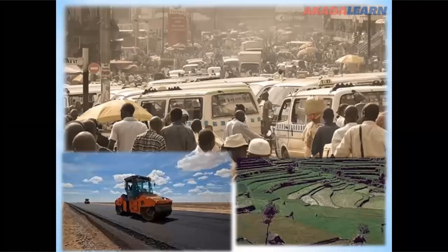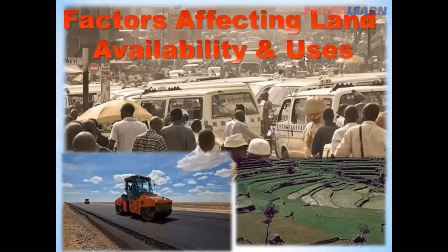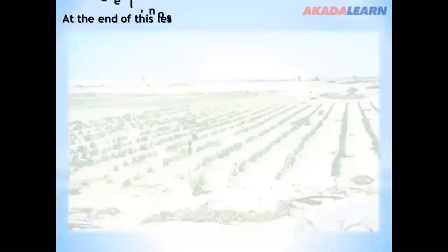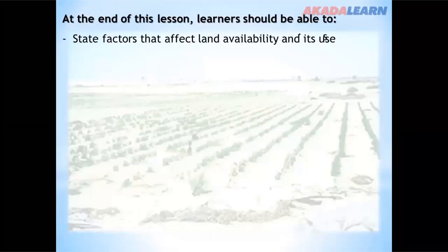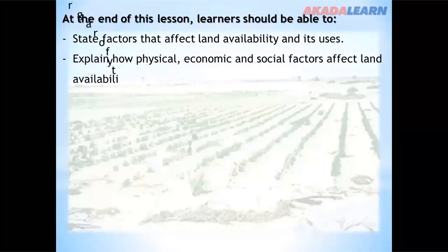Good day, learners. It's wonderful to be on this platform again today. Today we shall be looking at factors affecting land availability and users. At the end of this lesson, learners should be able to state factors that affect land availability and its users, and explain how physical, economic and social factors affect land availability for agricultural purposes.